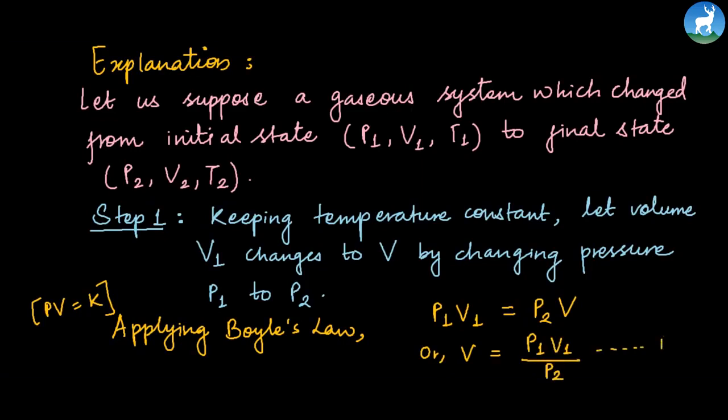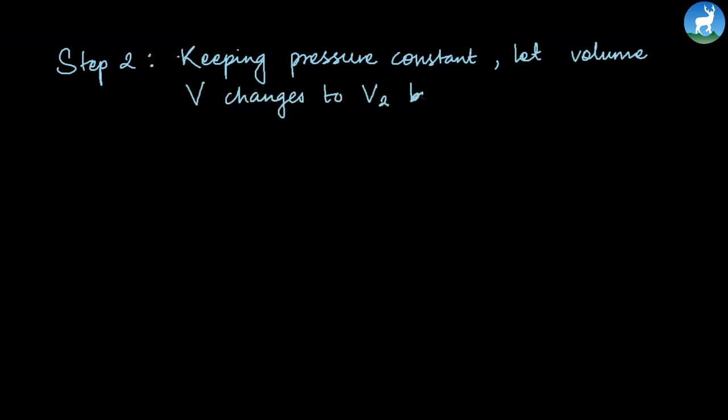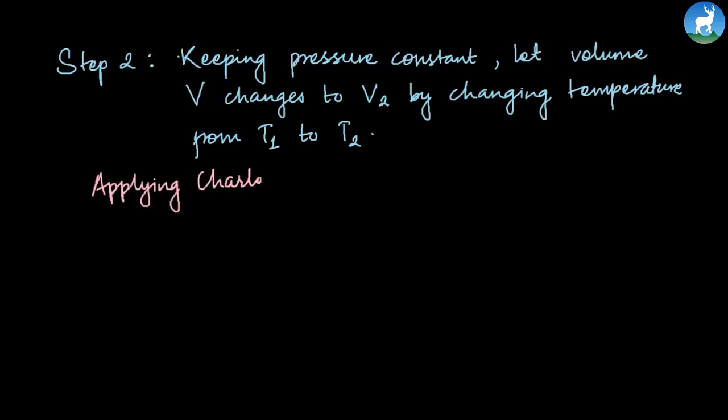Now Step 2: Keeping pressure constant, let volume V changes to V2 by changing temperature from T1 to T2. In Charles's law, pressure is constant and volume is related to temperature. When temperature changes, volume also changes. Now we apply Charles's law.